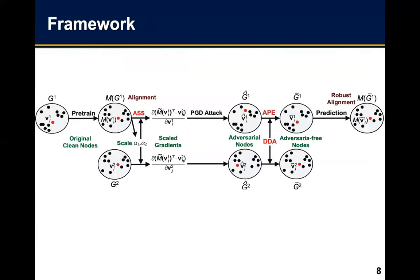This is the framework of our robust network alignment solution. First, we pretrain a network alignment function M on two clean graphs G1 and G2. Based on the pre-trained network alignment model M, we calculate the loss function of the network alignment. Then we calculate the singular scaling factors alpha-1 and alpha-2, and then compute the scaled gradients.